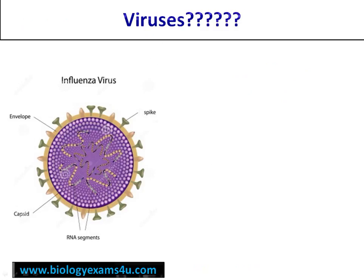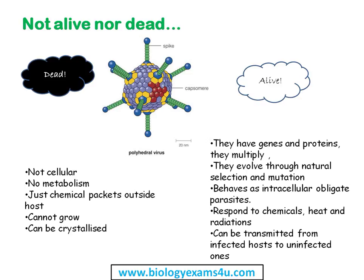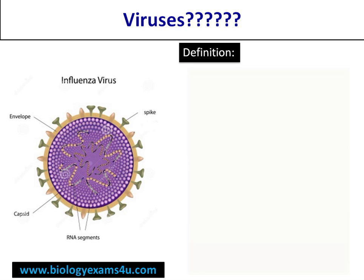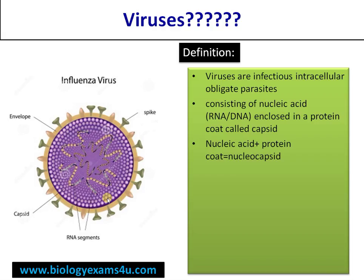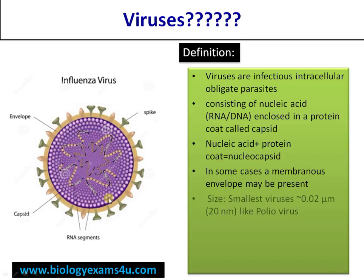Viruses are intracellular infectious obligate parasites, or strict parasites, consisting of nucleic acid — it can be either RNA or DNA — enclosed by a protein coat. The nucleic acid plus protein coat can be called a nucleocapsid. In some cases there is an outer membrane called an envelope. The size of the smallest virus is approximately 20 nanometers, like poliovirus, and larger viruses may be approximately 300 nanometers, like the smallpox virus and mimivirus. An intact infectious viral particle with nucleocapsid present outside the host cell is called a virion.